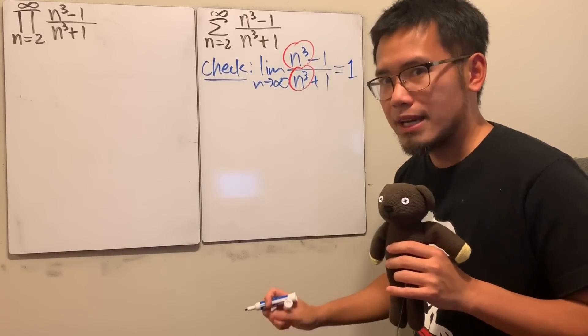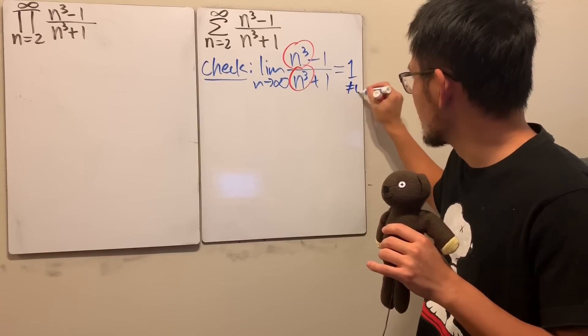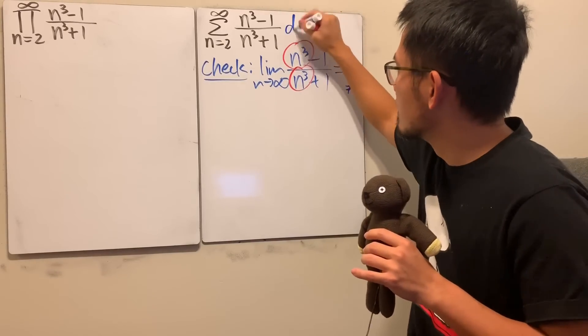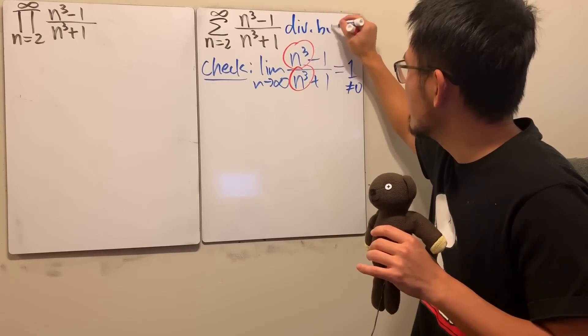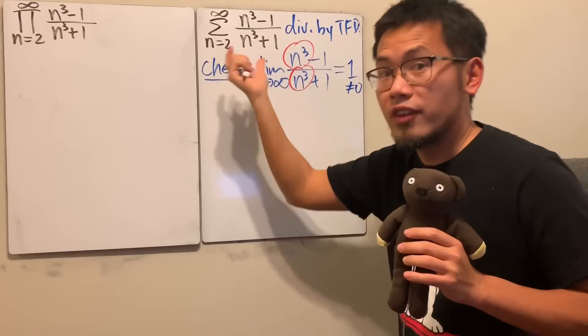Well with this being said, you see, this right here is 1, which is clearly not equal to 0. So this right here actually diverges by test for divergence. And we are talking about infinite sum.